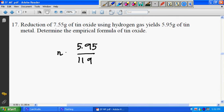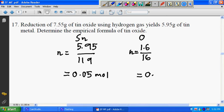Oxygen was 1.6 grams. So the number of moles is 1.6 divided by 16, that's the molar mass. So you get 5.95 divided by 119, and that's 0.05. And then you have 1.6 divided by 16, that will give you 0.1. You can add a 0 to make it 0.10, and then you compare this and this figure.